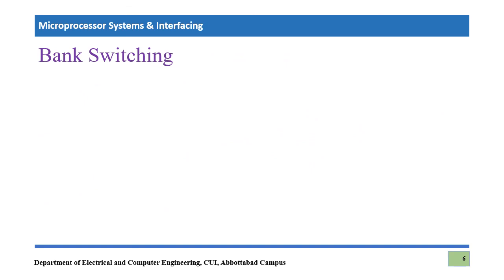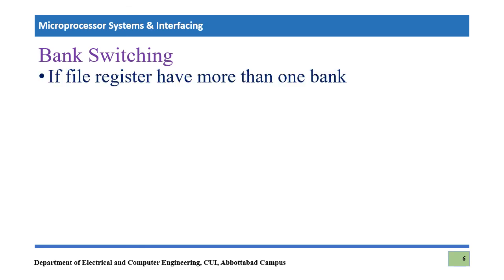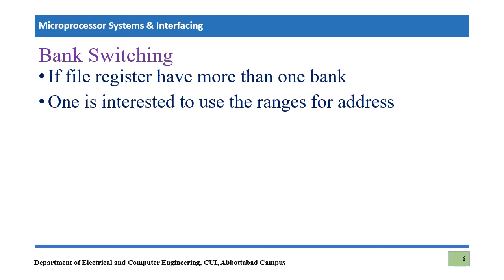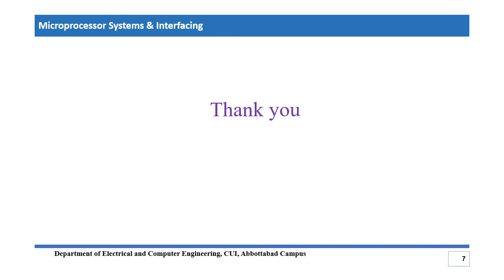Bank switching: when we power up the microcontroller, only the Access Bank or default bank is selected. If you want to access other banks — such as the 16 banks in PIC18F452 — you need to perform bank switching. We will cover how to access other banks in detail in coming lectures. That's it for this video; please comment any questions below. Thank you for listening.